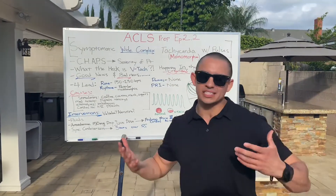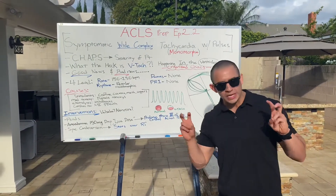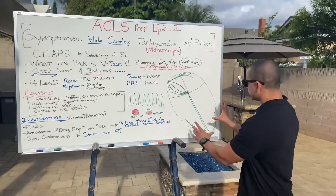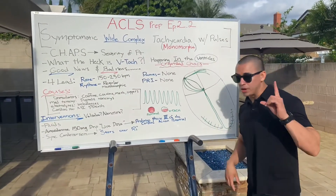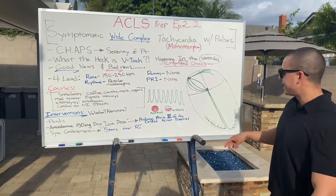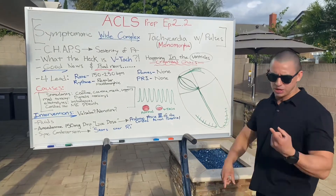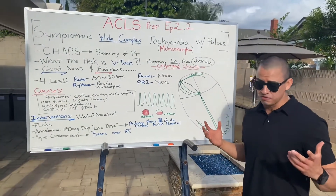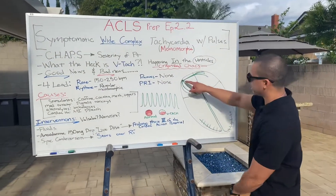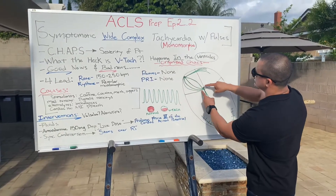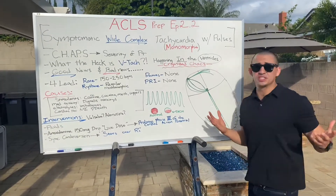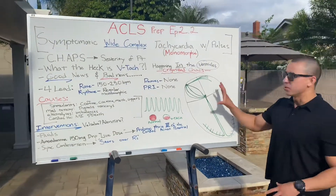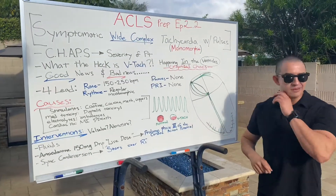So what is V-tach? It's essentially organized chaos. Ventricular tachycardia tells us it's happening in the ventricles — the lower chambers. Going back to the electrical pathway of the heart: we have three pacemakers — the SA node (primary), the AV node, and the Purkinje fibers. The signal travels: SA node → internodal pathways → AV node (the gatekeeper, allows ventricles to fill) → Bundle of His → left and right bundle branches → apex → Purkinje fibers.